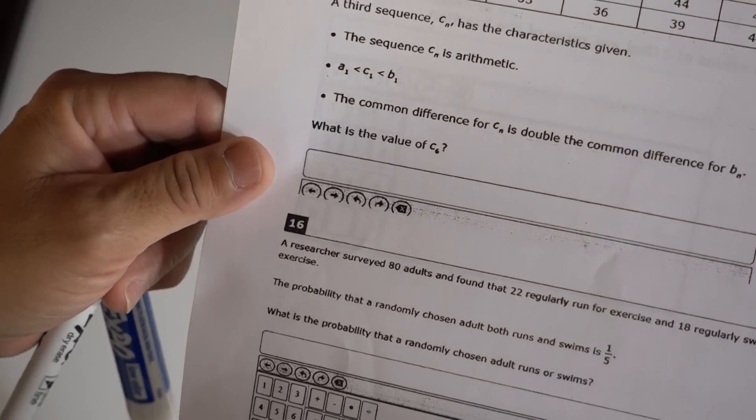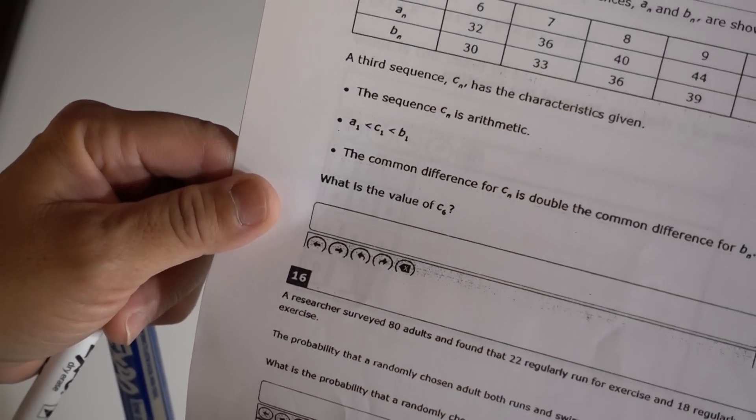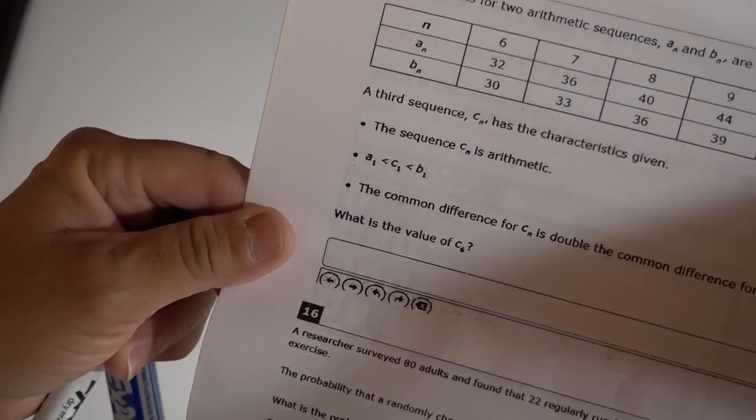This problem is about sequences. This is problem number 15 from your review of the AZ Merit. Let me read the problem. Several terms for two arithmetic sequences a_n and b_n are shown in this table.